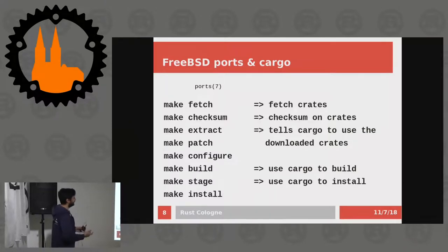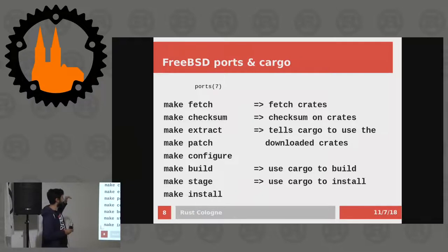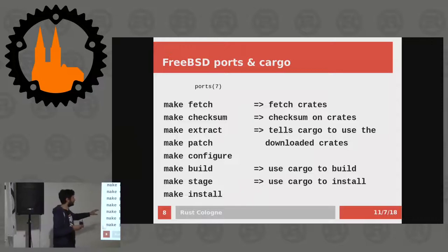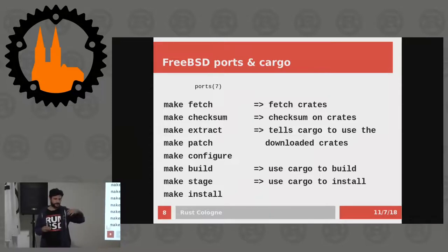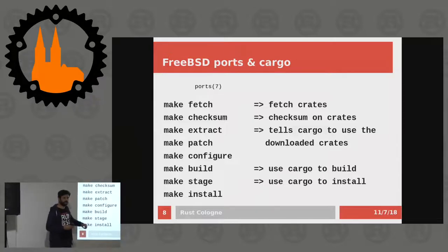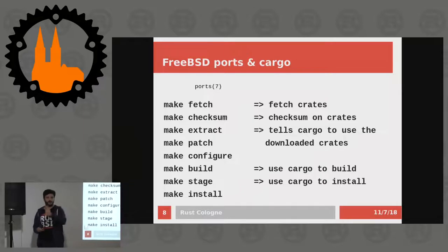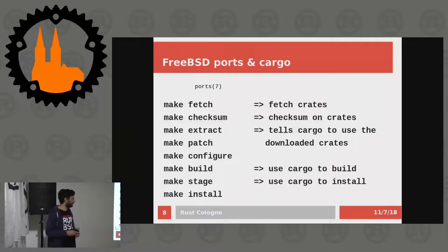So ideally, make fetch will fetch crates and all dependencies. Make checksum will verify those crates. Make extract will extract them, and then it tells cargo to use the downloaded crates instead of fetching from the internet. Then make build can use cargo build. With make stage, cargo install is used to install everything into the sandbox environment, and then make install or the package builder can use this output.